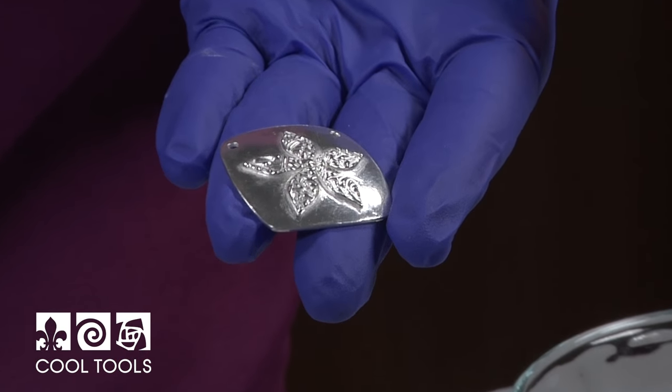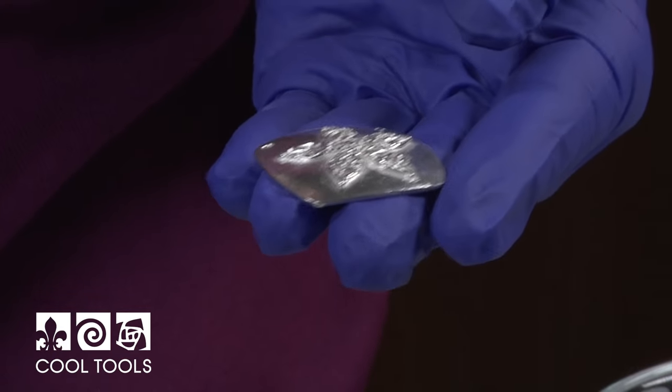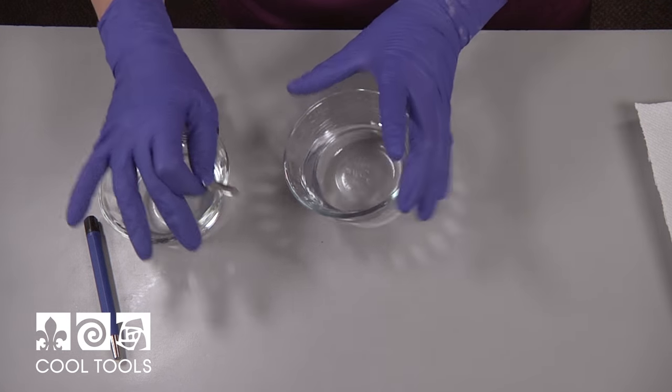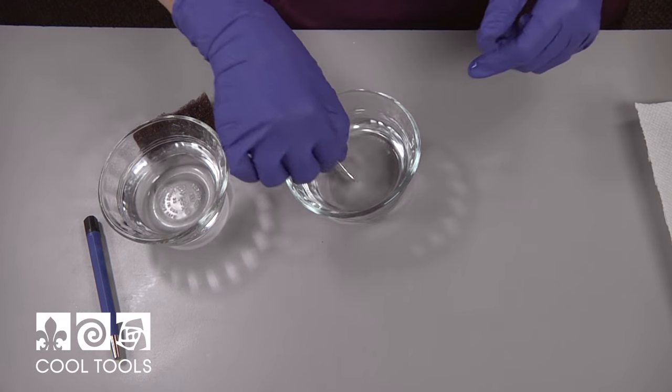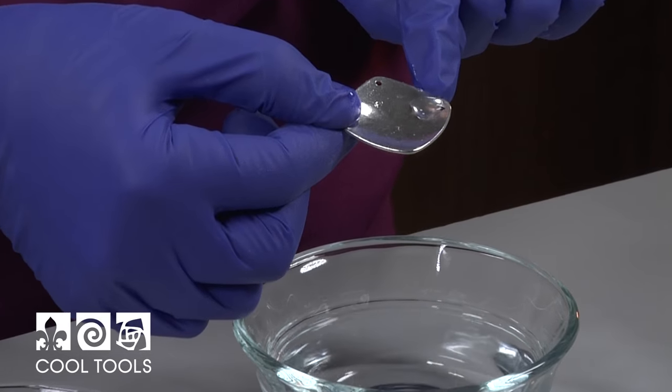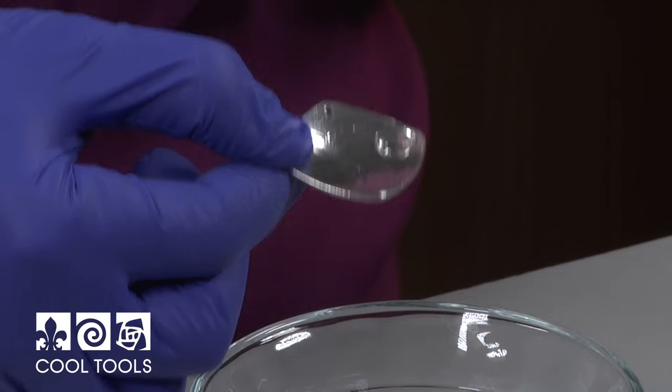I fired the piece and I tumbled it for two hours. And now I'm ready to prepare it for enamel. When you put water onto metal, what happens is it beads up and you can see how it's beading up here. I want it to sheet on the metal, not bead up. If it beads up like this, your enamels may pull away from the edge.